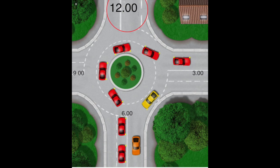First you need to understand what is meant by a left turn, ahead at a roundabout, or a right turn. Imagine the roundabout is a clock face. You always approach it at the bottom where it says six o'clock. The first exit at nine o'clock is a left turn. The twelve o'clock exit with a red circle around it is ahead. Any exit that comes after the twelve o'clock exit is a right turn. On this picture there's only one left turn and only one right turn, but some roundabouts you come across will have more than one.